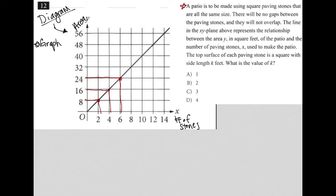The top surface of each paving stone is a square with side length k. So I'm just going to draw an example of that. There's my paving stone. And of course, each side is k. What is the value of k?